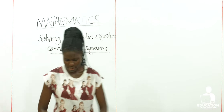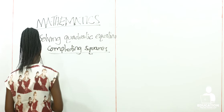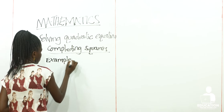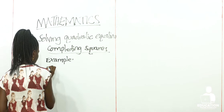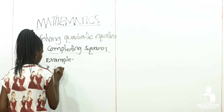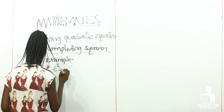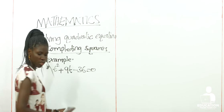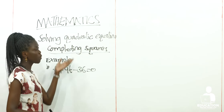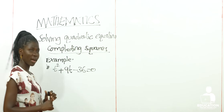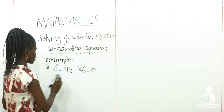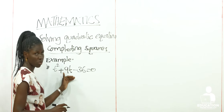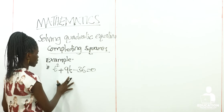So let's solve our next example. This is our second example under the method of completing squares. This is going to help us understand more on how to use the method. When given a number like this, we divide the value of b by 2 and square it. First we shall add it, then we shall also subtract it.